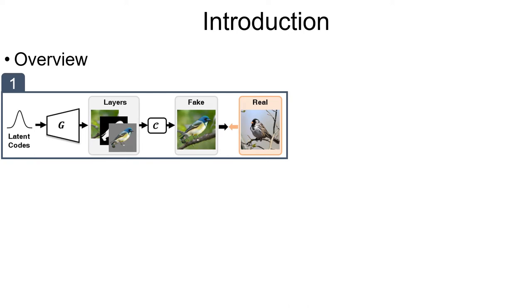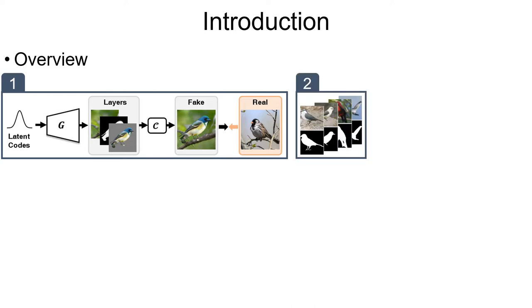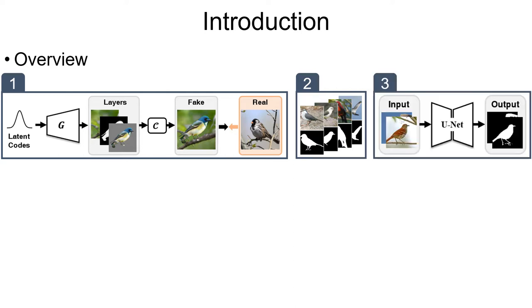Our idea consists of three steps. First, we train a layered GAN which can generate photorealistic images and foreground masks. Second, a synthetic segmentation dataset is generated using the trained layered GAN. Third, a segmentation network, for example U-Net, is trained on the synthetic dataset.